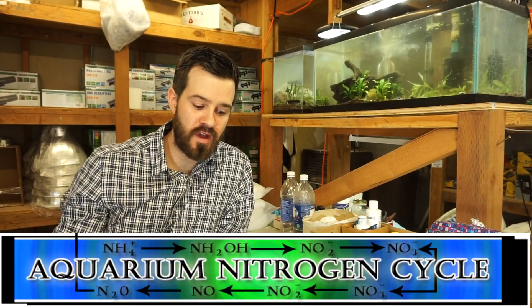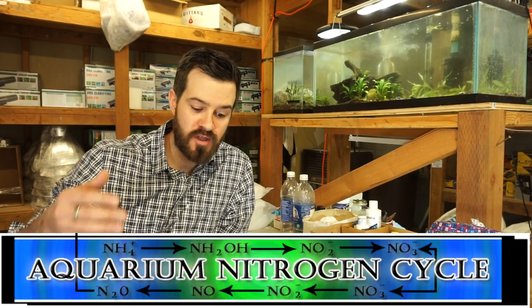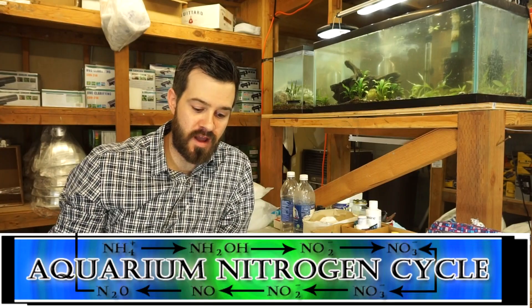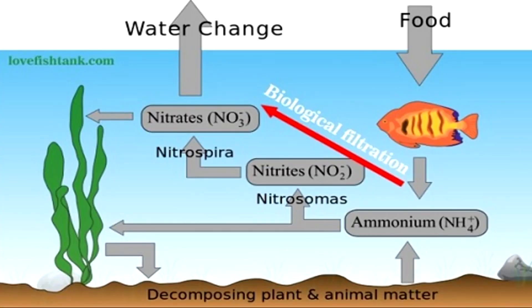Fish, food, and other nitrogen waste goes into our aquarium and goes through the decomposition cycle, which takes ammonia and converts it to nitrate.